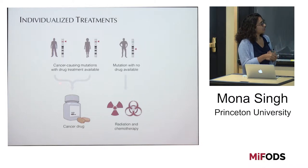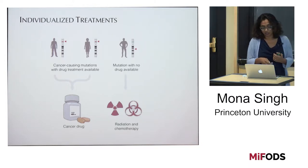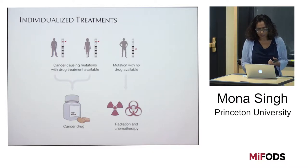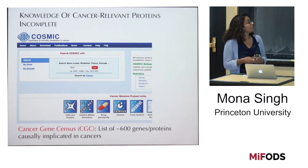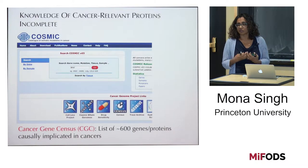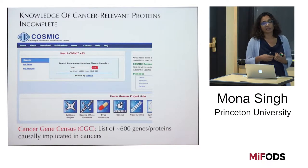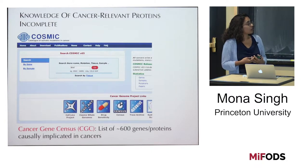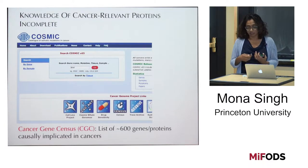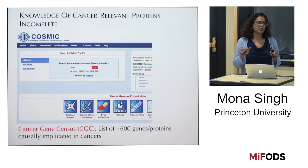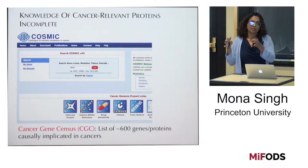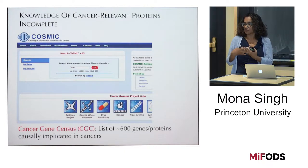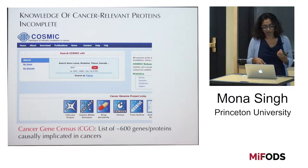If there is such a drug, you get personalized treatment; if not, you get radiation and chemotherapy. Through a lot of painstaking experimental work over the years, we actually know a lot about the processes that underlie cancer and about the proteins that are cancer-relevant. But very importantly, this knowledge of cancer-relevant proteins and mutations is incomplete. So what I'm going to talk about today is taking a network point of view and thinking about cancer and other diseases to try to uncover cancer-relevant proteins.